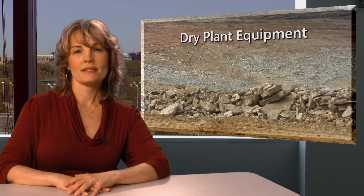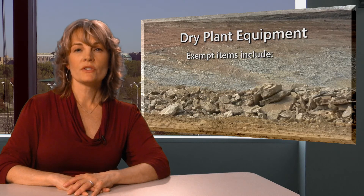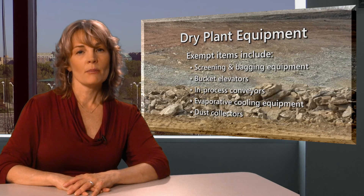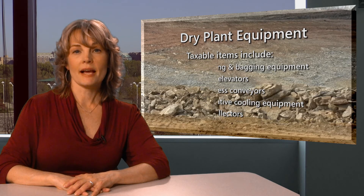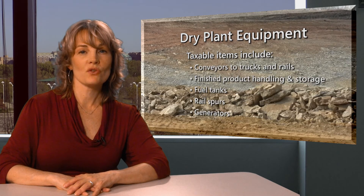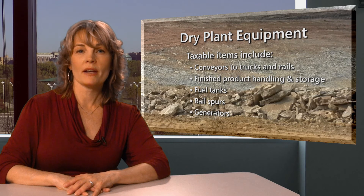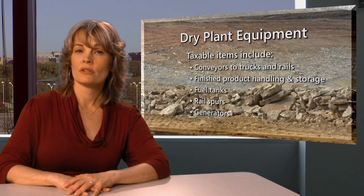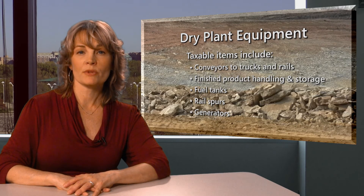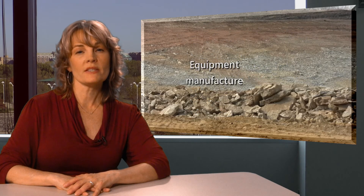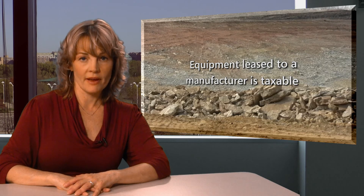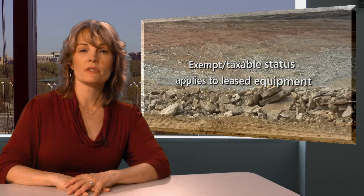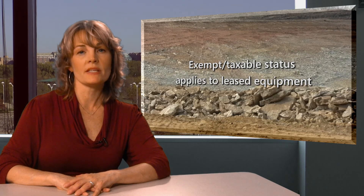For dry plant equipment, exempt items include screening and bagging equipment, bucket elevators, in-process conveyors, evaporative cooling equipment, and dust collectors. Taxable items include conveyors to trucks and rails, finished product material handling and storage, fuel tanks, rail spurs, and generators. Equipment leased to a manufacturer is considered taxable to the lessee or manufacturer, and the exempt versus taxable status applies to leased equipment as well.